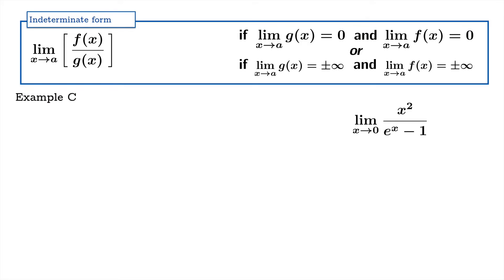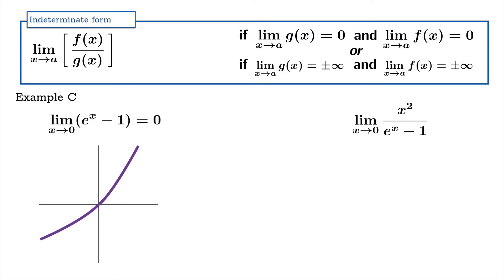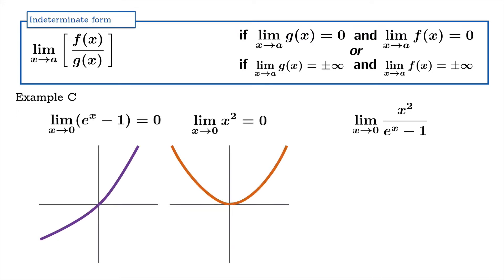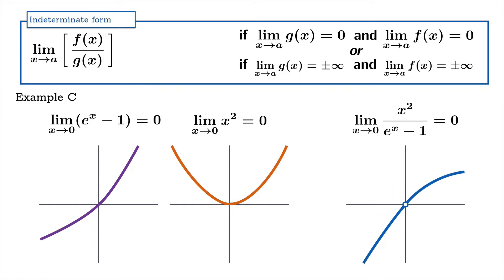Example C: x squared over e to the x minus one. We're looking at the limit as x approaches zero. Both the numerator and the denominator have limiting values of zero as we approach the origin, and in this case the limit of the quotient has a limiting value of zero.